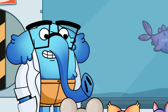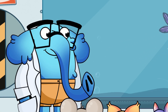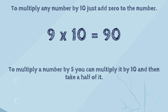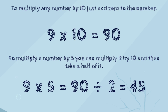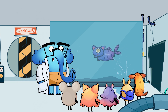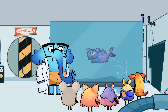Let's repeat the tricks we've learned. To multiply any number by ten, just add zero to the number. To multiply a number by five, you can multiply it by ten and then take half of it. That's it for today. Next time, we'll learn some new tricks.